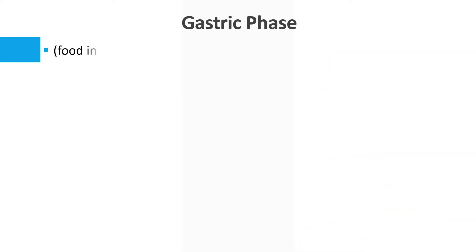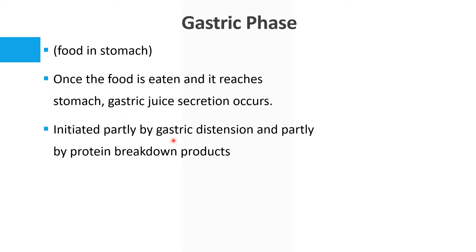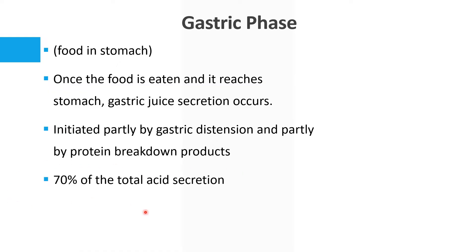The gastric phase occurs once the food is eaten and reaches the stomach, causing gastric secretion. This is initiated partly by gastric distension — when there is food inside the stomach, the stomach distends — and also partly by protein breakdown products.